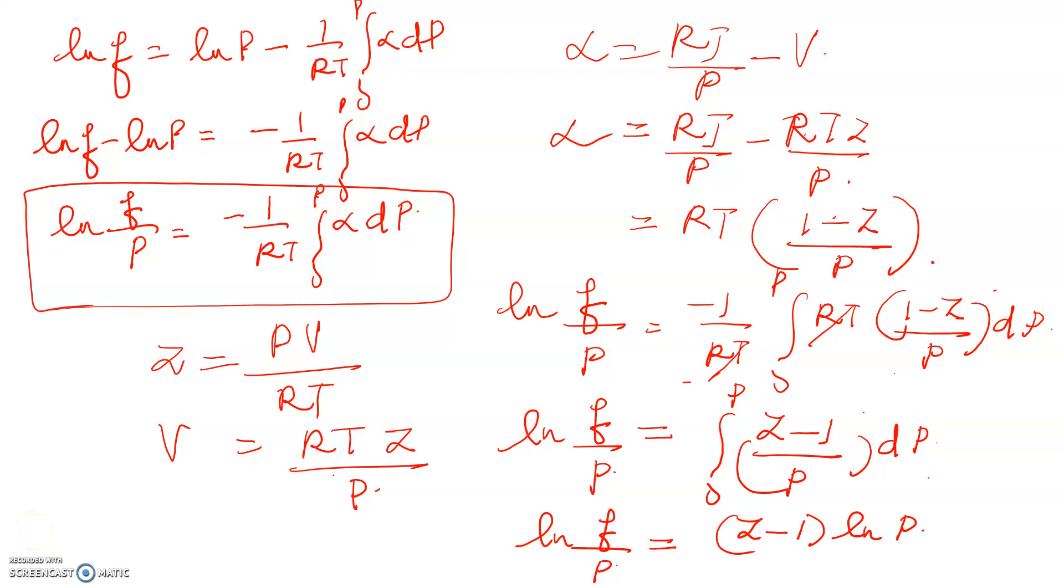So now we have obtained ln f by P is equal to integral 0 to P z minus 1 by P into dP. If this integral can be evaluated, we can write ln f by P is equal to z minus 1 ln P.